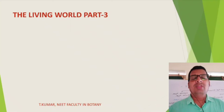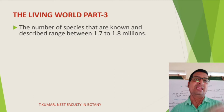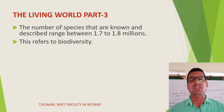Hello everyone, today we will be discussing about the remaining notes. The number of species that are known and described range between 1.7 to 1.8 millions. This is referred to as biodiversity.